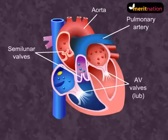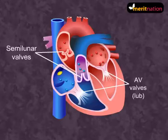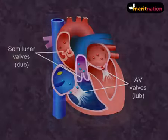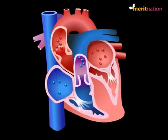During ventricular diastole, the ventricles relax. Arterial pressure falls and blood begins to flow back into the ventricles. This reversal of pressure causes the semilunar valves to shut, producing the second heart sound, 'dub'. So now you know what produces the sound 'lub-dub'.